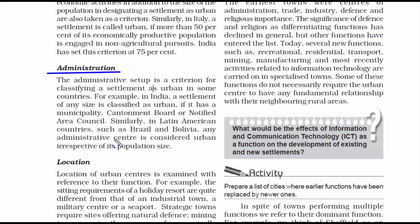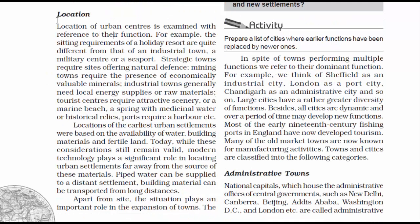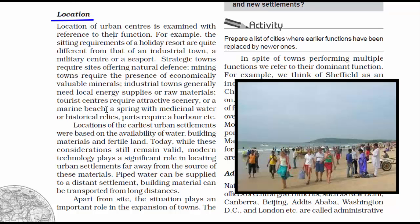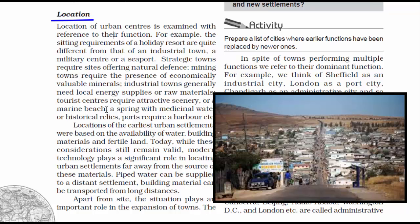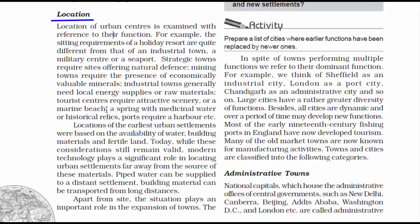The third criterion is administration — meaning civic authority. In India, any place is considered urban if it has a municipality, cantonment board, or notified area council — civic bodies not found in rural areas. The fourth criterion is location. Any urban area needs to be at a strategic location for its true potential to be realized. For example, Goa is famous for tourism and beach vacation; mining towns are close to raw materials; and goods for export must be near harbours or seaports.